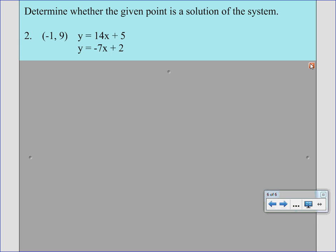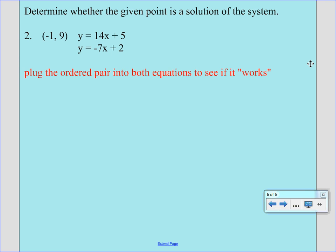Our second example is going to look just like our first example. We have two equations. We have an ordered pair. And we are going to plug that ordered pair into both equations to see if it works. For most of you it's going to be a good idea to go back and label that ordered pair, just so that you get the variables in the right spots. So in the first equation we are going to replace y with 9 and x with negative 1. We bring the 9 down. We multiply the 14 times the negative 1.